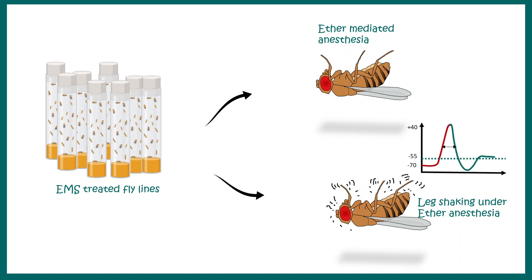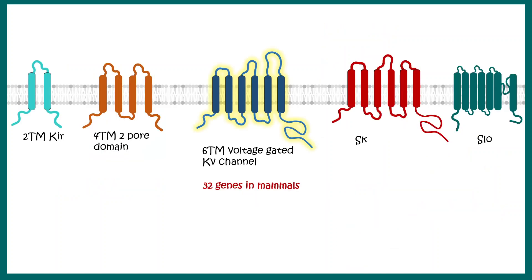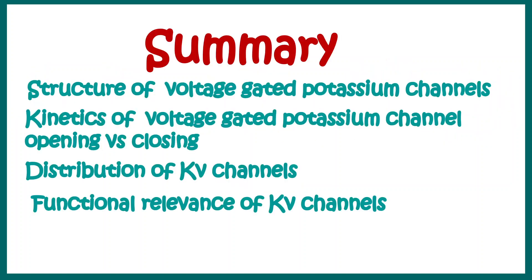In retrospect, the shaker mutation likely prolonged the repolarization phase, leading to hyper-excitability. Beyond voltage-gated potassium channels, there are 32 genes in mammals encoding KV channels. Other potassium channel types include two-transmembrane-domain inward rectifier channels, four-transmembrane-domain two-pore-domain channels, and slow-kinetics potassium channels such as slow poke or SK-type channels. To summarize, we learned the structure of the voltage-gated potassium channel, opening and closing kinetics, distribution, and functional aspects of KV channels.